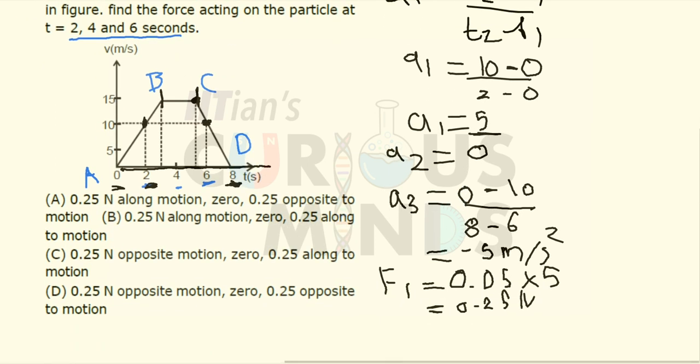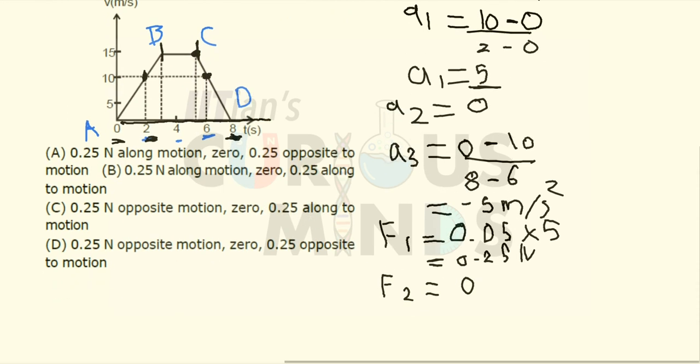In the second case, F2 will be equal to 0 because acceleration is 0. In the third case, F3 is equal to mass into acceleration. Mass is 0.05, acceleration is minus 5, so it will be equal to minus 0.25.